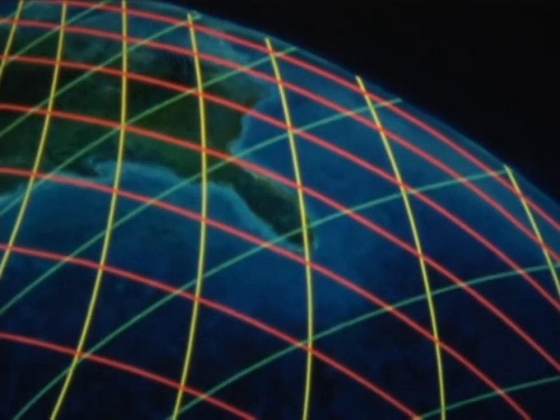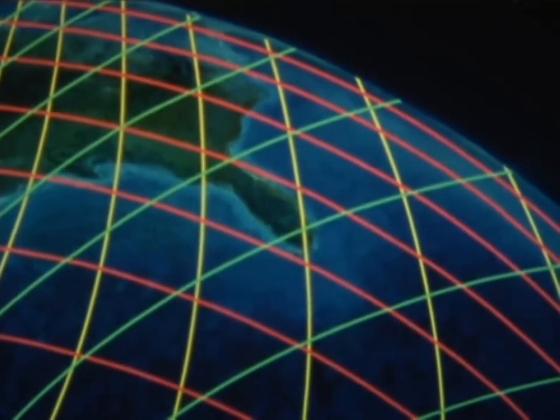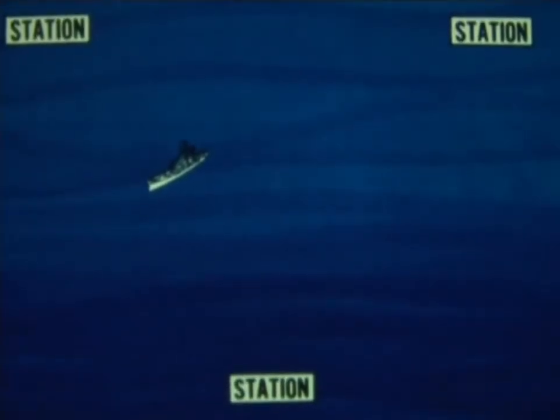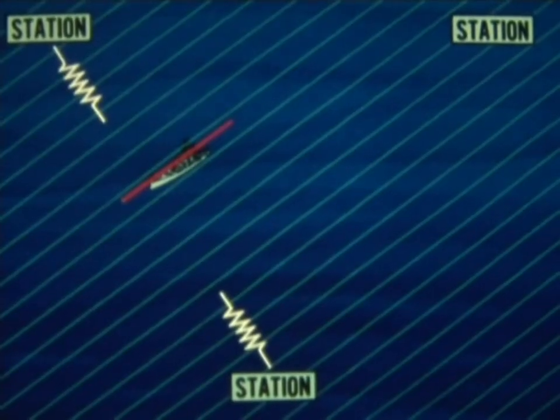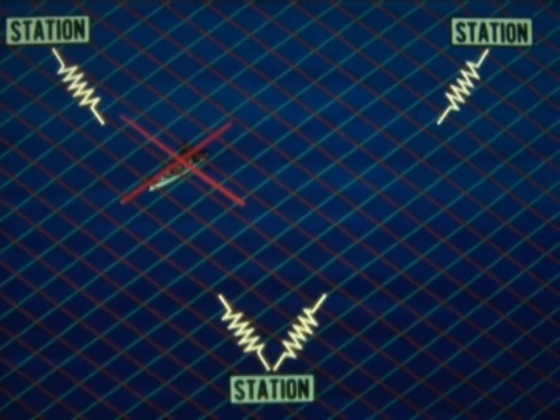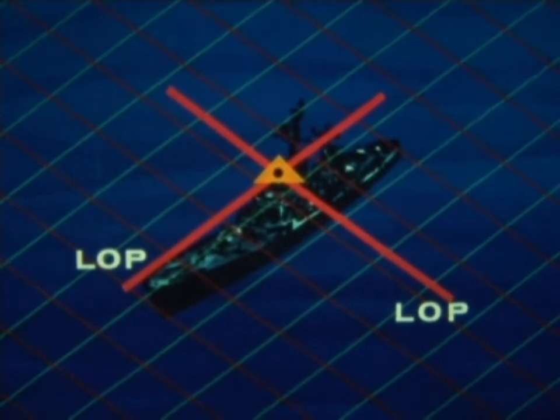The network of eight stations provides a grid of lanes covering the entire globe, and this gives the geographical references we need to be able to fix our position. The signals from one pair of stations will give one LOP. Using a third station gives another pair, and consequently, another LOP. And at the point where these two lines intersect, we get the fix.